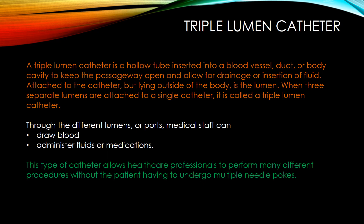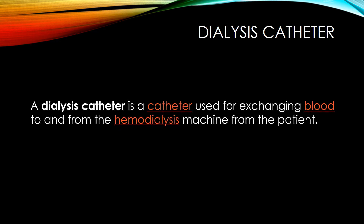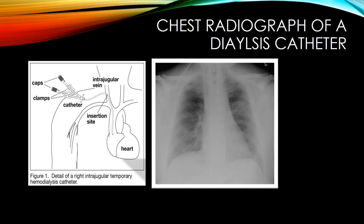A triple lumen catheter is a hollow tube inserted into a blood vessel, duct, or body cavity to keep a passageway open and allow drainage or insertion of fluid. Attached to the catheter but lying outside the body is the lumen. When three separate lumens are attached to a single catheter, it's called a triple lumen catheter. Through the different lumens or ports, medical staff can draw blood and administer fluids or medications — this allows many different procedures without multiple needle sticks. A dialysis catheter is used for exchanging blood to and from the hemodialysis machine from the patient.